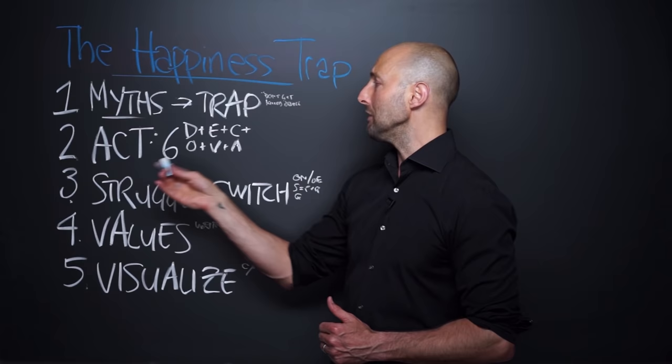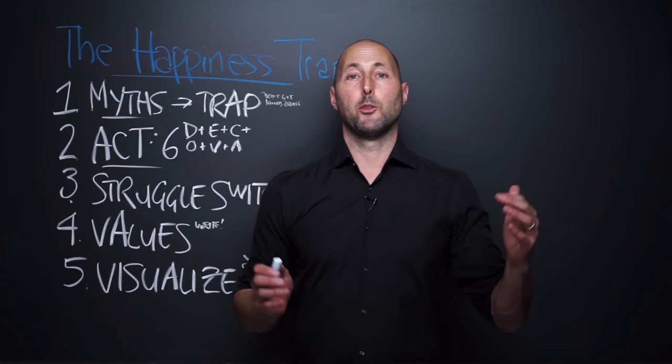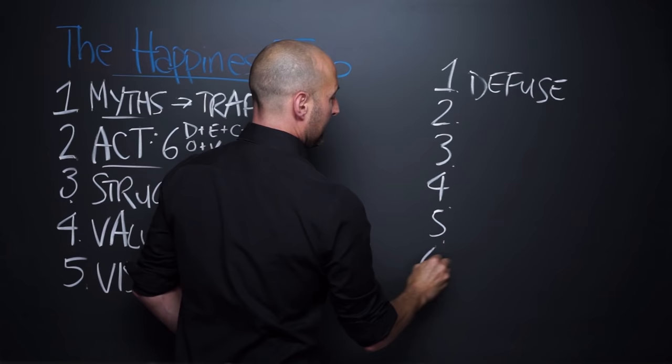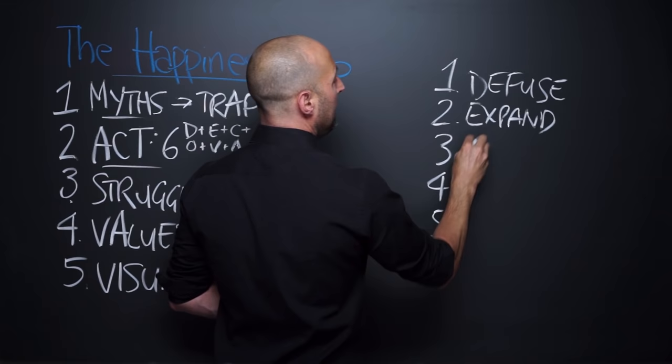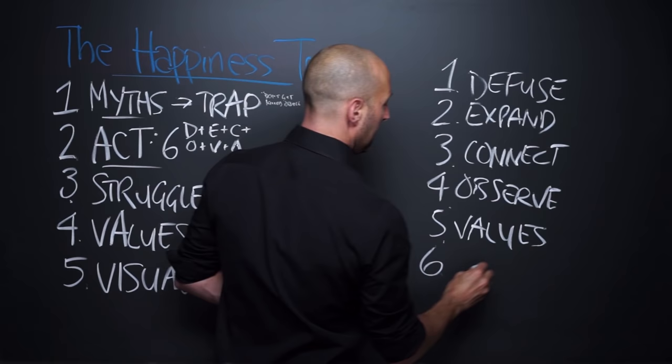Let's look at ACT's six core principles. Acceptance and commitment therapy. There are six core principles that Russ walks us through throughout the book. Let's take a quick look at them. One, the first idea is we need to diffuse. Let's go through our six. The second thing we need to do is we need to expand. The third is we need to connect. The fourth is to observe. The fifth is to align with our values. And the sixth is to take committed action.